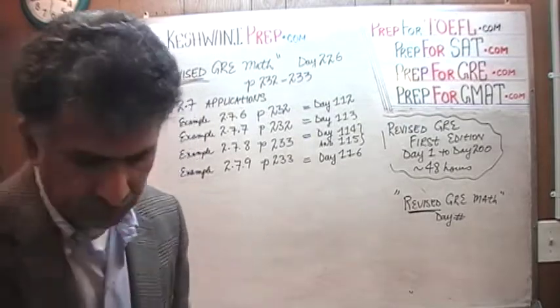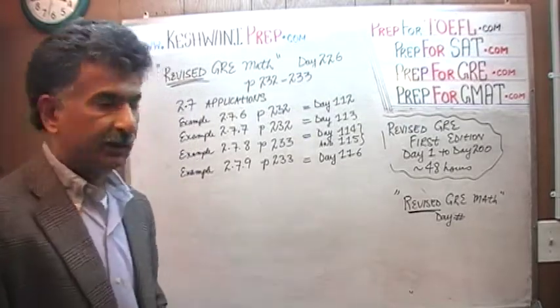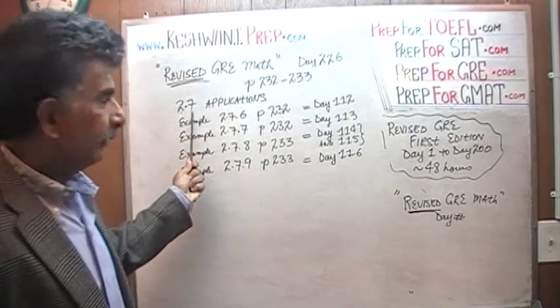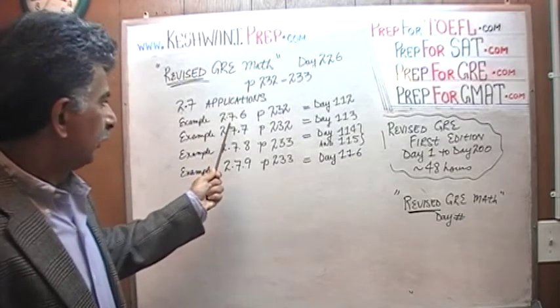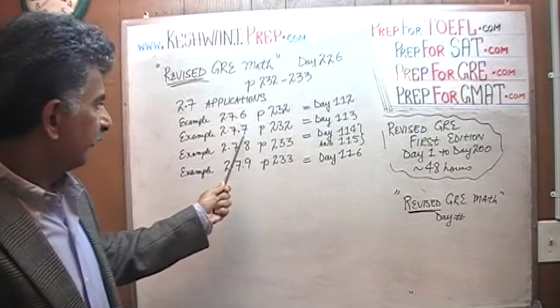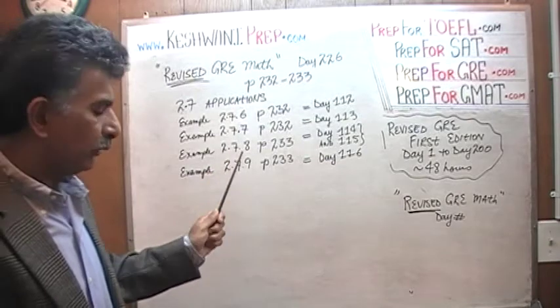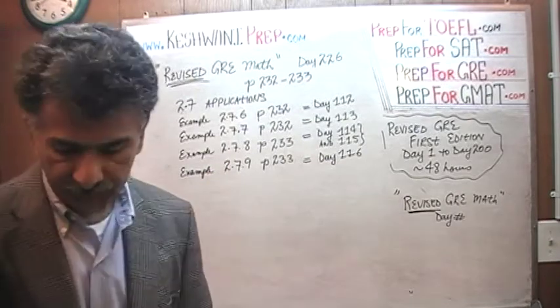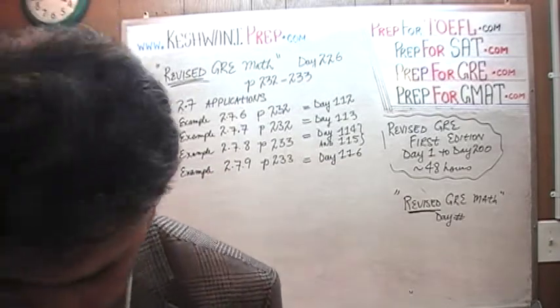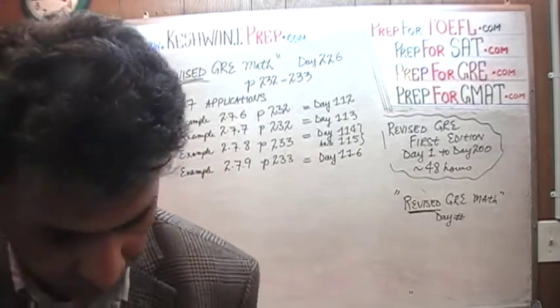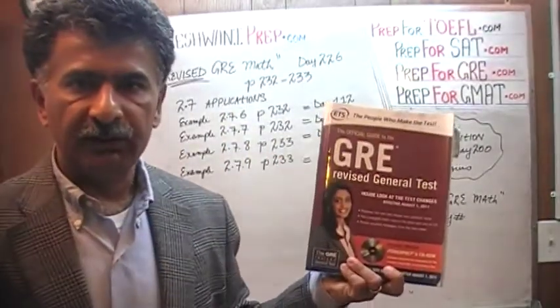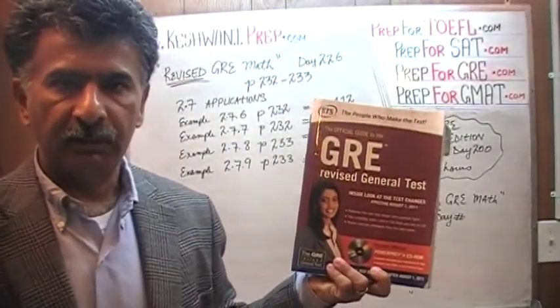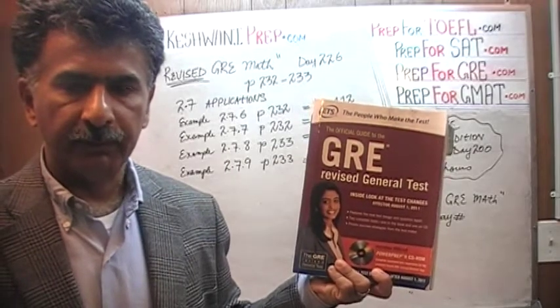On those two pages you will find the continuation of what they are calling 2.7 applications — problem number 2.7.6, .7, .8, and .9. All four of these problems are the exact same problems that already appeared in the first edition of the Revised GRE book that came out last summer, summer of 2011.